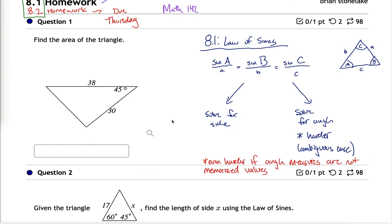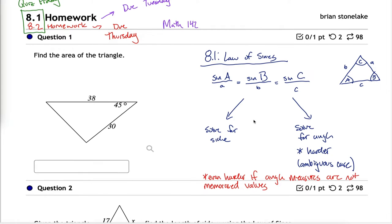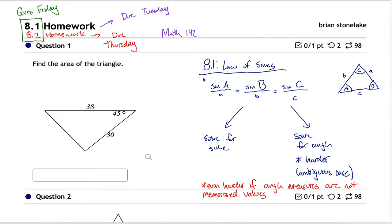One last piece of information in the review portion: how we derived the law of sines. You don't need to recreate that argument since it's not a proofs class. But a product of that derivation was one more formula that you won't have to use a lot — though it shows up exactly once in the homework, on question one.